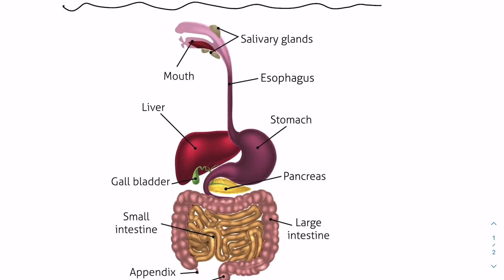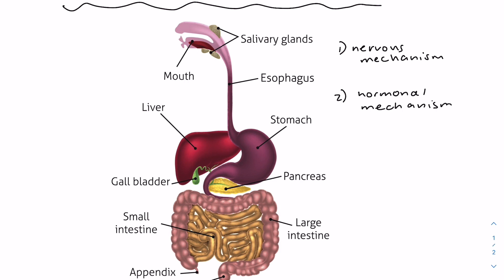The secretion of these digestive juices is controlled in two ways. Firstly, we have the nervous mechanism, which involves the nervous system. Then we have the hormonal mechanism, which involves hormones secreted into the bloodstream. The sight and smell of food triggers an immediate response by which gastric juice is secreted by the stomach before the food is even ingested.